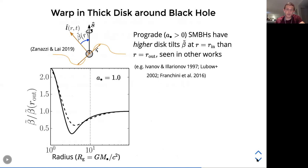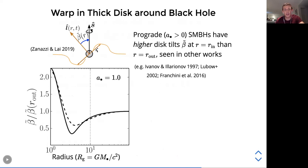The warp profile results for a prograde disk confirm our WKB expectations: as you approach the inner edge of the TDE disk, the warp becomes highly oscillatory. This result has been reproduced by a number of other works that also found the tilt profile near the TDE disk's inner edge becomes highly oscillatory.